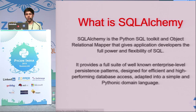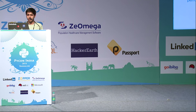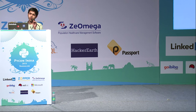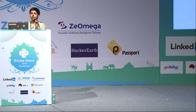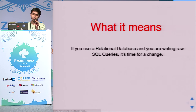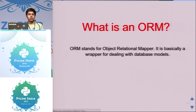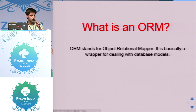What is SQLAlchemy? It's basically a toolkit and an ORM. What it basically means is if you use a relational database and you're writing raw SQL queries, it's time for a change. It is more secure — you don't have to manually escape characters to prevent injections. And it's more Pythonic. An ORM is an object relational mapper. You can basically create a DDL in your code like a class, define the table name, and write the columns in your class.